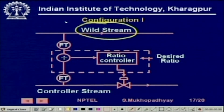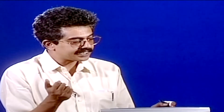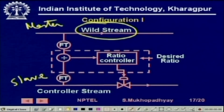We do not directly control the wild stream; it is controlled by other considerations. It is like a master stream which changes independently because of some operator change. And this is the slave stream or the controlled stream. Basically our idea is that if the wild stream changes we must change this stream such that the ratio of the volumetric flow rate in the wild stream and the volumetric flow rate in the controlled stream are maintained as constant. This is our objective.